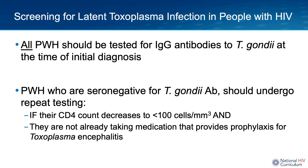This is done by checking serum for IgG antibodies against toxoplasma. Additionally, if these individuals have a negative serum toxo-IgG, they should be re-screened if their CD4 count drops to less than 100 and they are not already taking prophylactic medications to prevent toxoplasma reactivation.